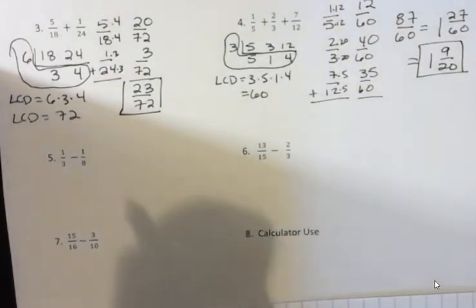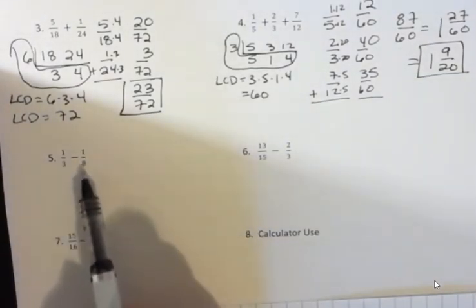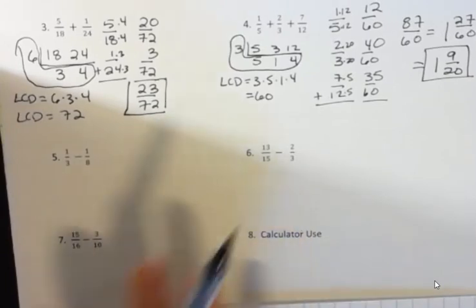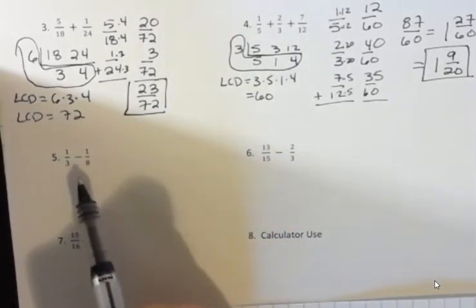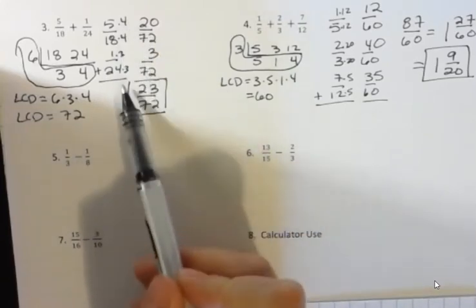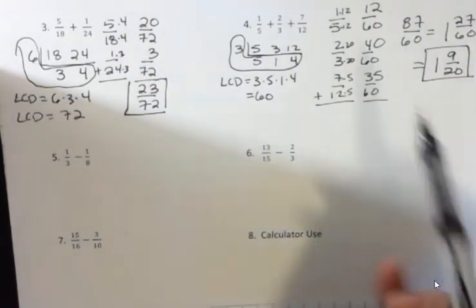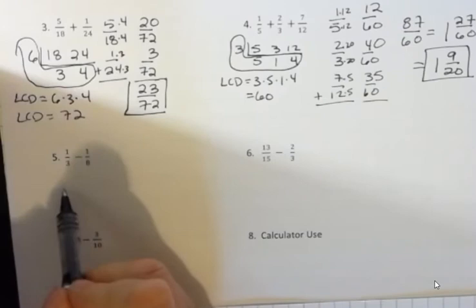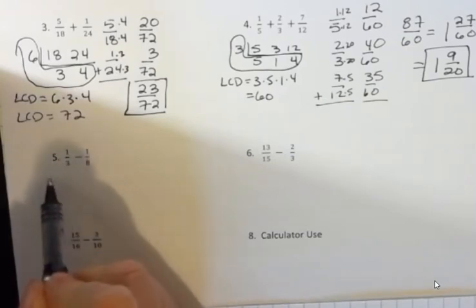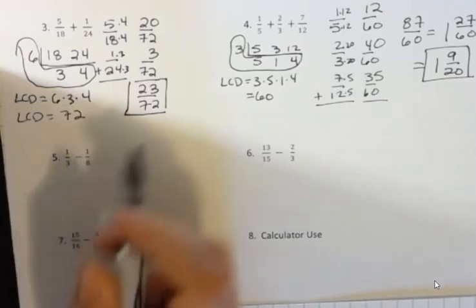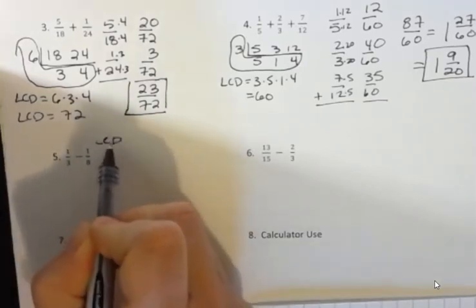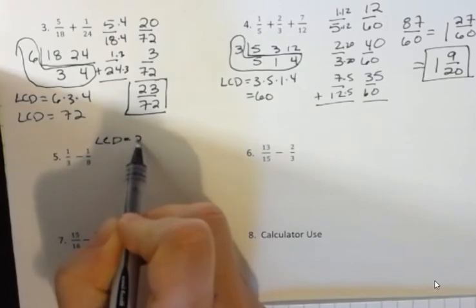You have to find a common denominator and the common denominator between 3 and 8 is just 24 because there's nothing in common. We're just going to multiply those together. Now the method I was doing before was adding them vertically and that's perfectly fine, but we could also add them horizontally.